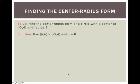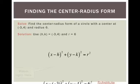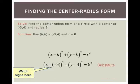Let's work through an example. Find the center-radius form of a circle with a center at (-3, 4) and radius of 6. So I know my h is -3, my k is 4, and my r is 6. Here is our center-radius form of the circle. I'm going to plug in my h of -3, my k of 4, and my r of 6.